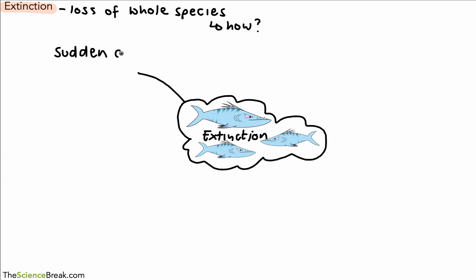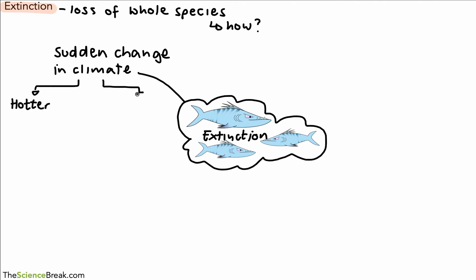The first reason we could get extinction is if there is a sudden change in the climate. By change we could mean that it got hotter or it got colder. Either way, these fish may not be adapted for those conditions and so could become extinct.